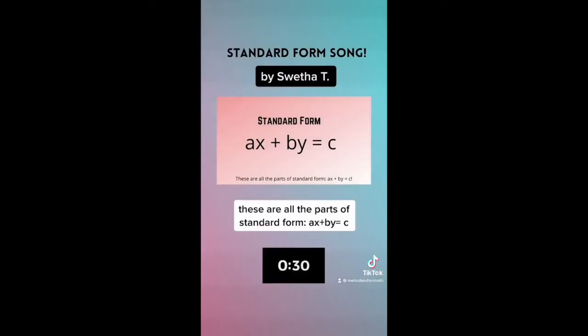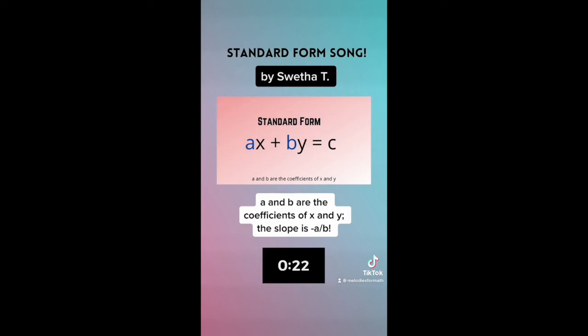Let's start the timer. These are all the parts of standard form, ax plus by equals c. A and b are the coefficients of x and y, the slope is minus a over b.